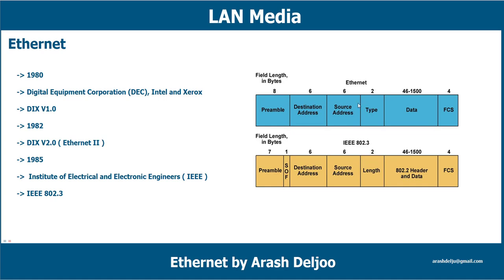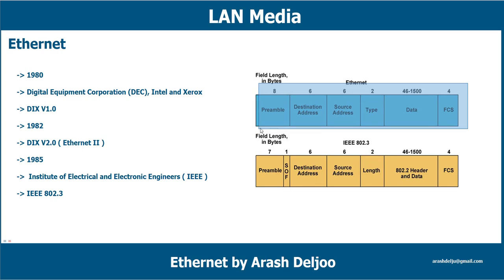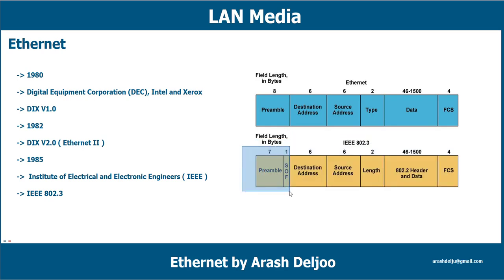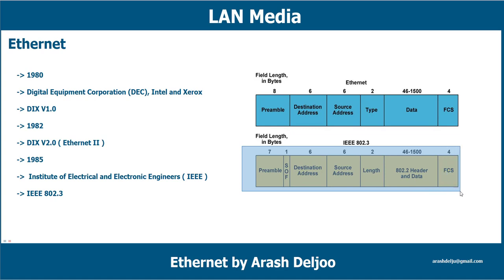In the DIX version 2 frame, you can see: preamble, destination address, source address, type, data, and FCS. In the IEEE 802.3 frame, you can see: preamble, start of frame delimiter (SOF), destination address, source address, length, 802.2 header, data, and FCS.